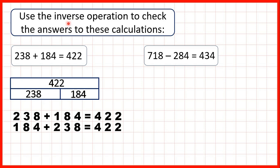But here we're told to use the inverse operation to check and the inverse means the opposite. So we can check this calculation using subtraction. This bar model also gives us two subtraction calculations. It tells us that 422 minus 238 should equal 184 and it also tells us that 422 minus 184 should equal 238.